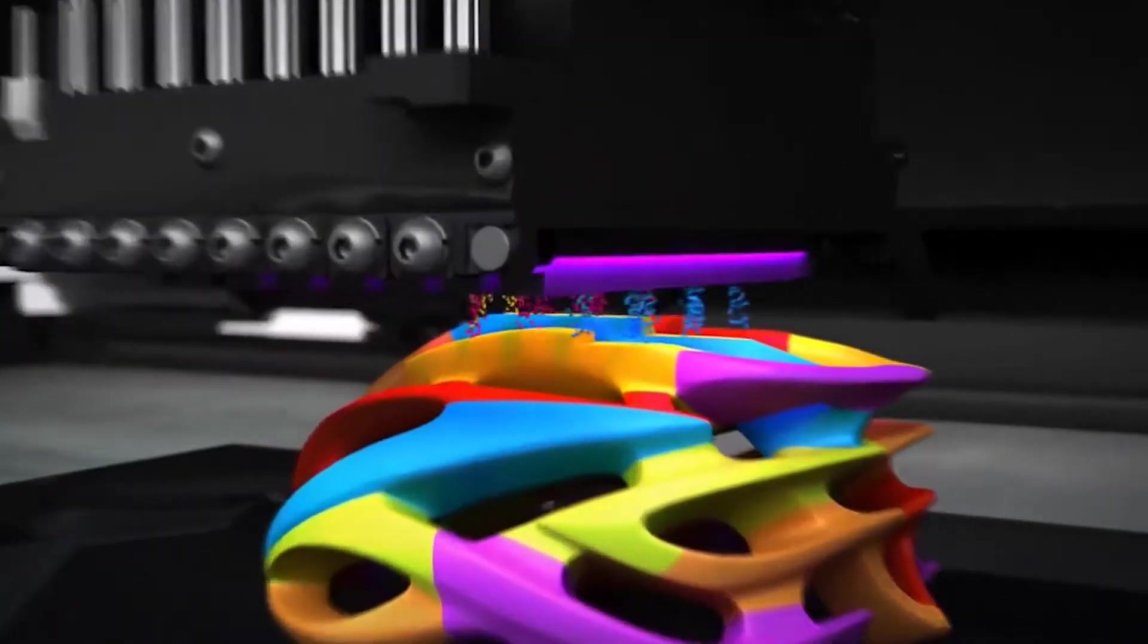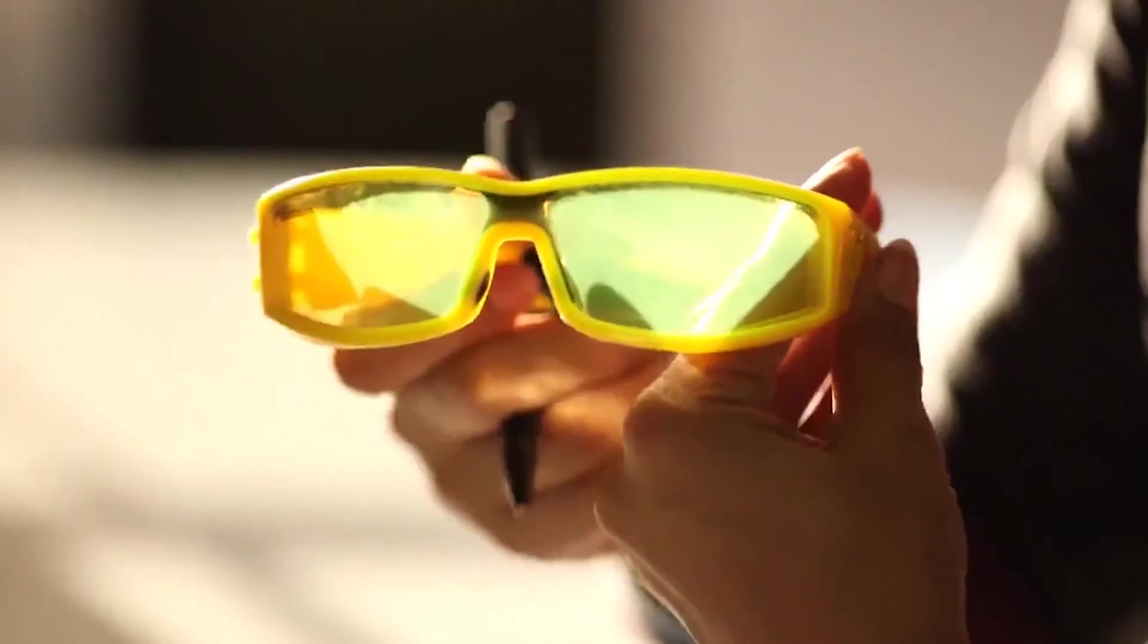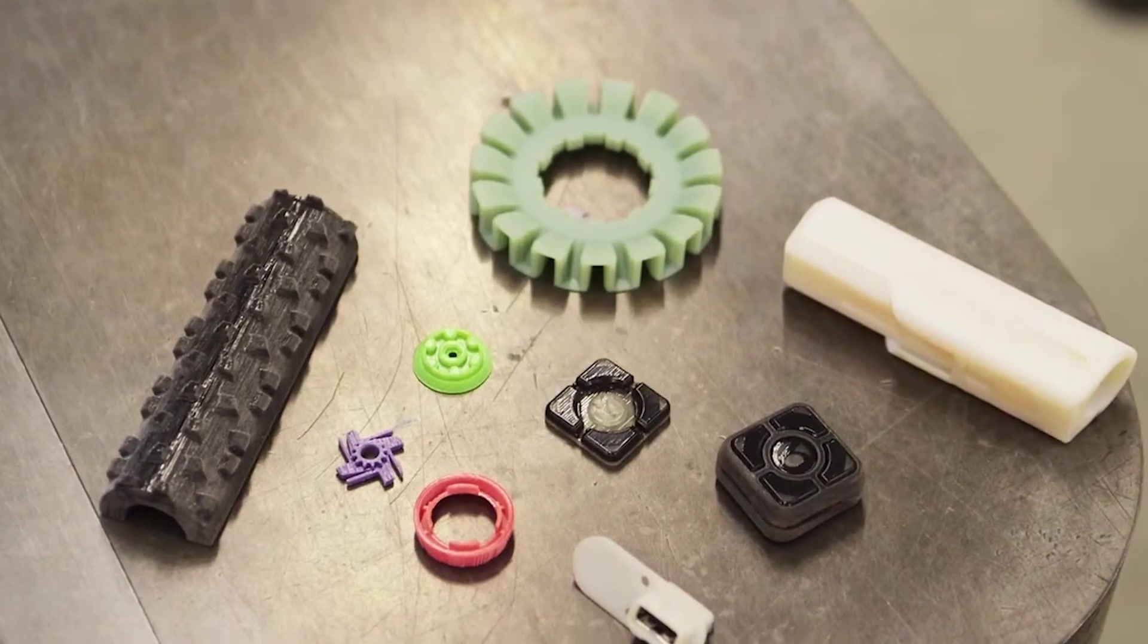PolyJet Connex is a unique multi-material 3D printing technology with three operating modes: mixed parts, digital materials, and mixed tray.